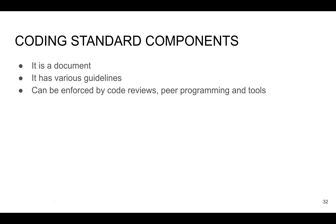In the coding standard document you can also declare how you are going to follow the code review process, whether you are going to use pair programming, or what tools you are going to use. For example, you can define that in your project you will use SonarQube for checking your code, then define all the rules you want to follow for that tool, and it will automatically check all your code during the automatic code analysis stage.